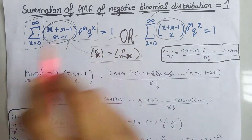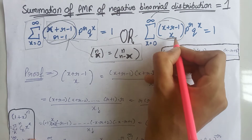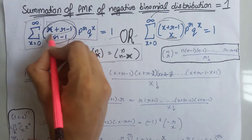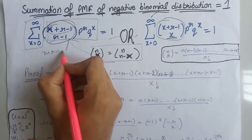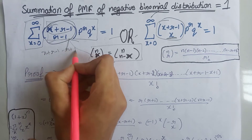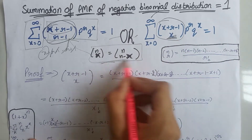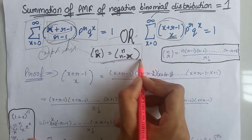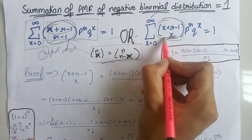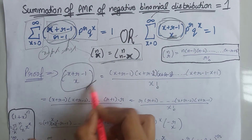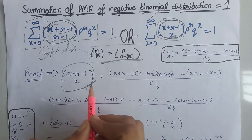The difference here is that we write this term minus this — that is, x plus r minus 1, minus r plus 1. On cancellation, we write here only x, because of this formula. So firstly we will take this combination term and try to simplify it.